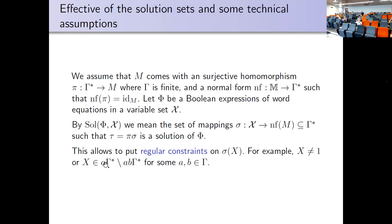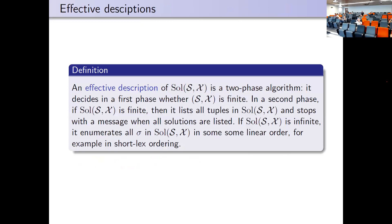Makanin himself asked in his original paper whether one could restrict variables to finitely generated subgroups, and this was open until our paper showing we can solve equations in free groups with rational constraints. An effective description uses a two-phase algorithm: in phase one, decide finiteness; in phase two, if finite, list all solutions in lexicographic normal form. If infinite, enumerate all solutions — using a length-lexicographic ordering, you know whether a solution exists since there's always a minimal one of exponential length.